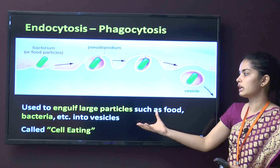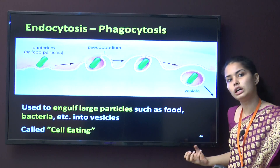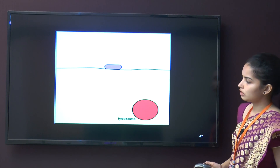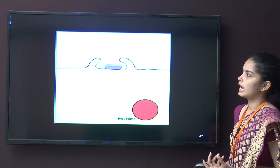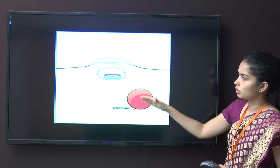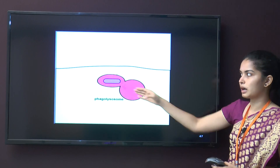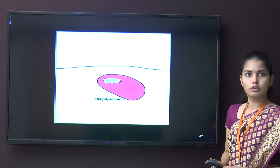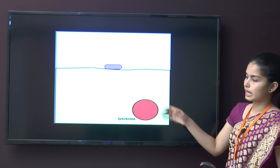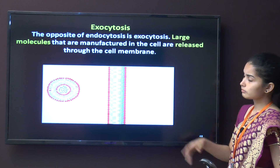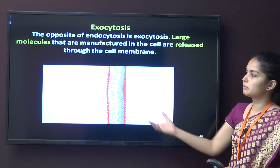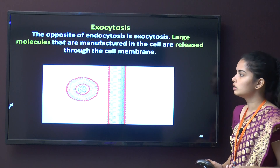Phagocytosis is known as cell eating — cells engulf large particles such as bacteria. In phagocytosis, the cell extends pseudopodia to surround the particle. A lysosome then combines with the phagosome to form a phagolysosome, and digestion takes place.